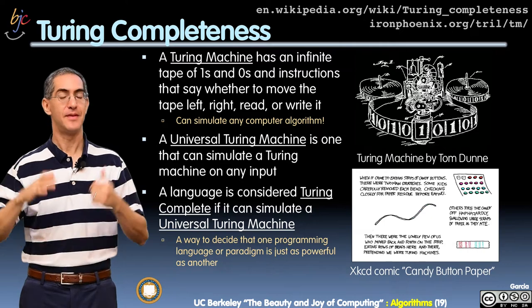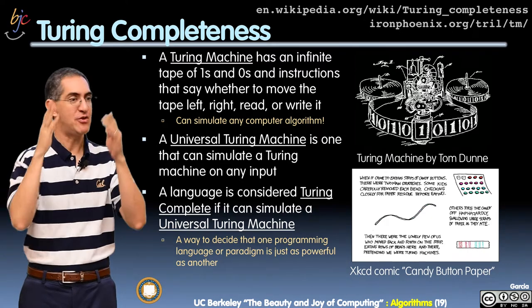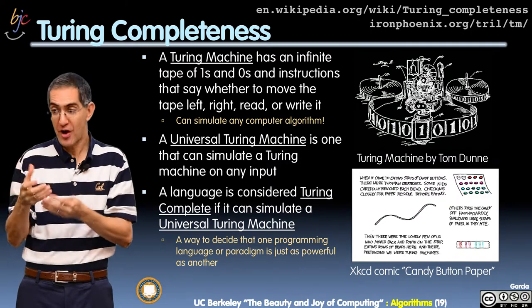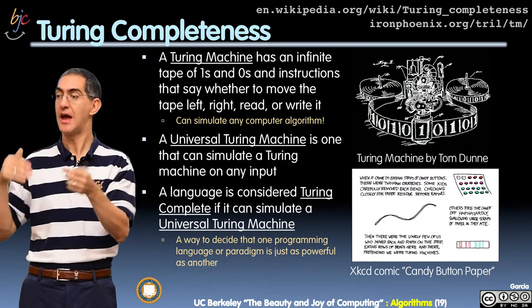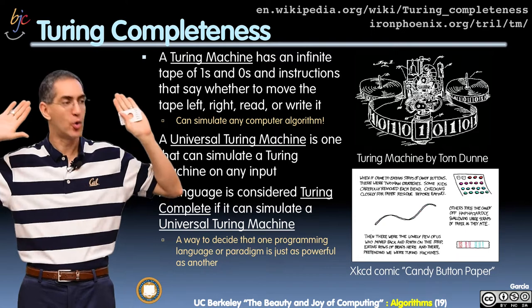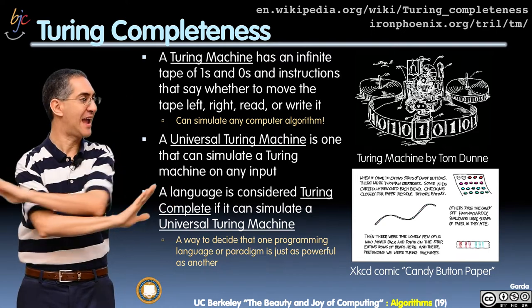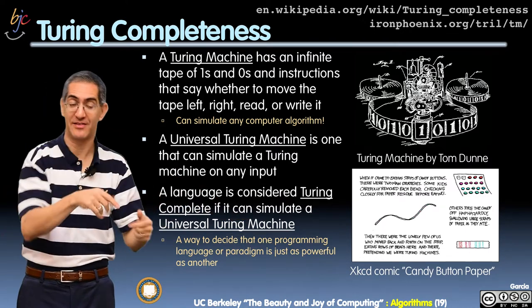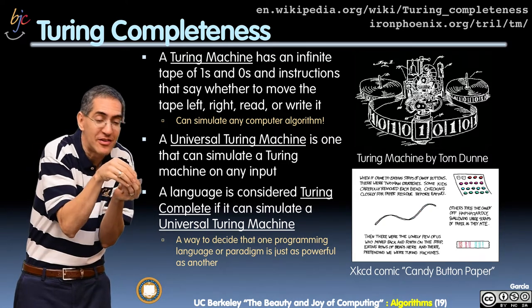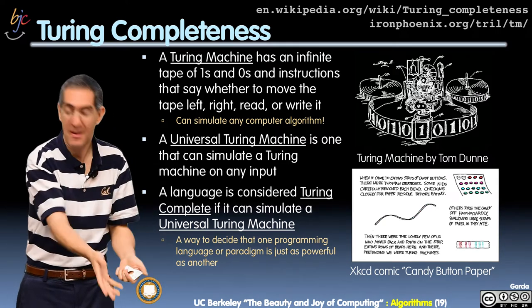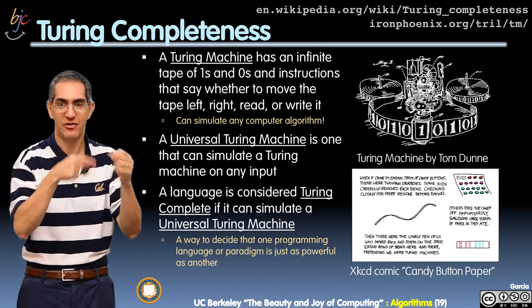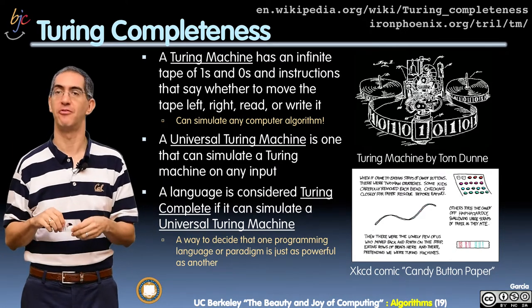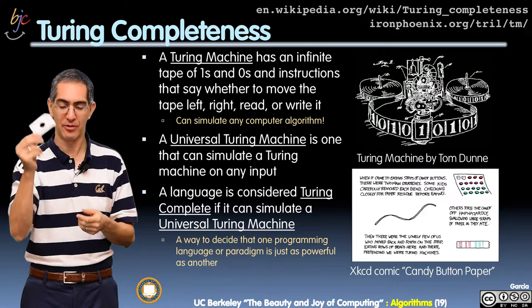The big picture here is: if you have a language that can simulate a universal Turing machine — meaning read in the program, read in the data, do some encoding, and run that program on that data — then you are as powerful as every other language ever. Isn't that amazing? Now, not all languages can do that. Some languages are small and can just add and subtract — a calculator can't do that. But most languages are very powerful and can do it. So this is really cool.